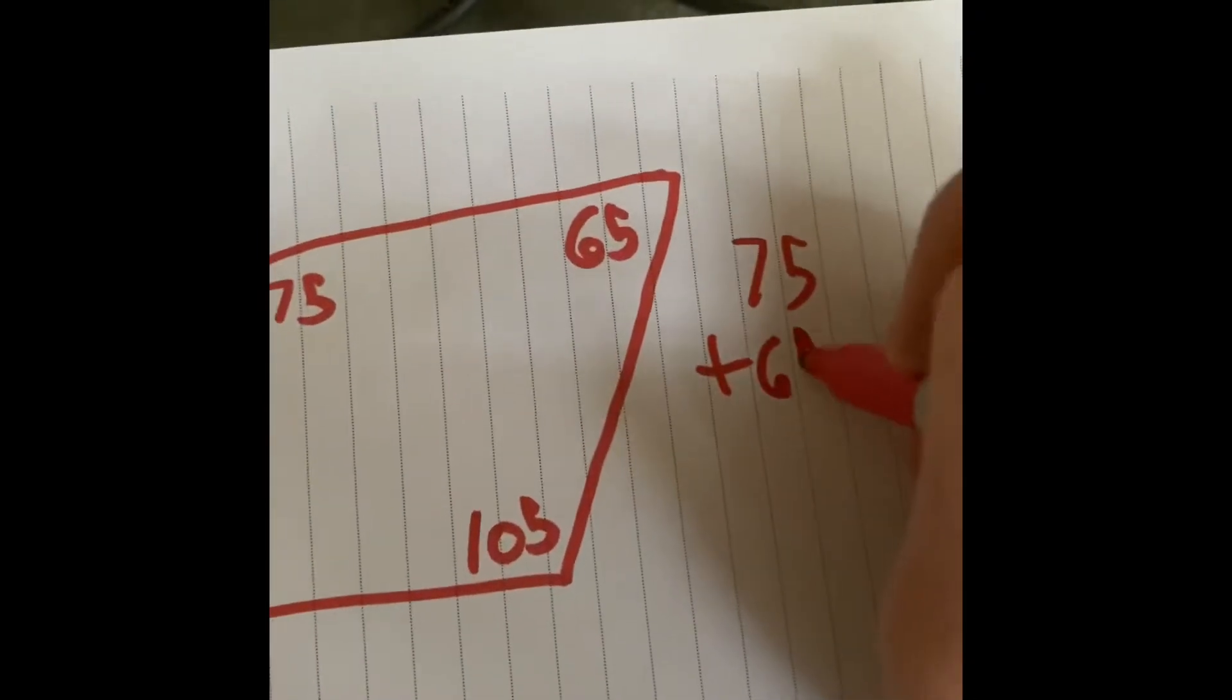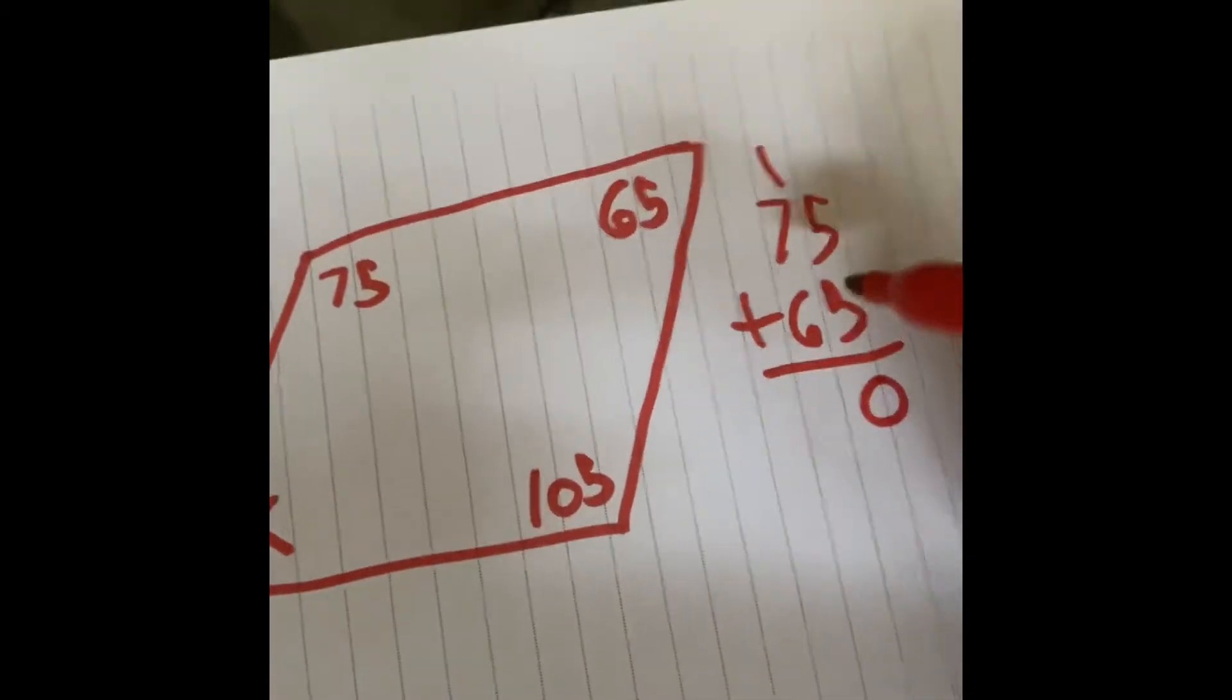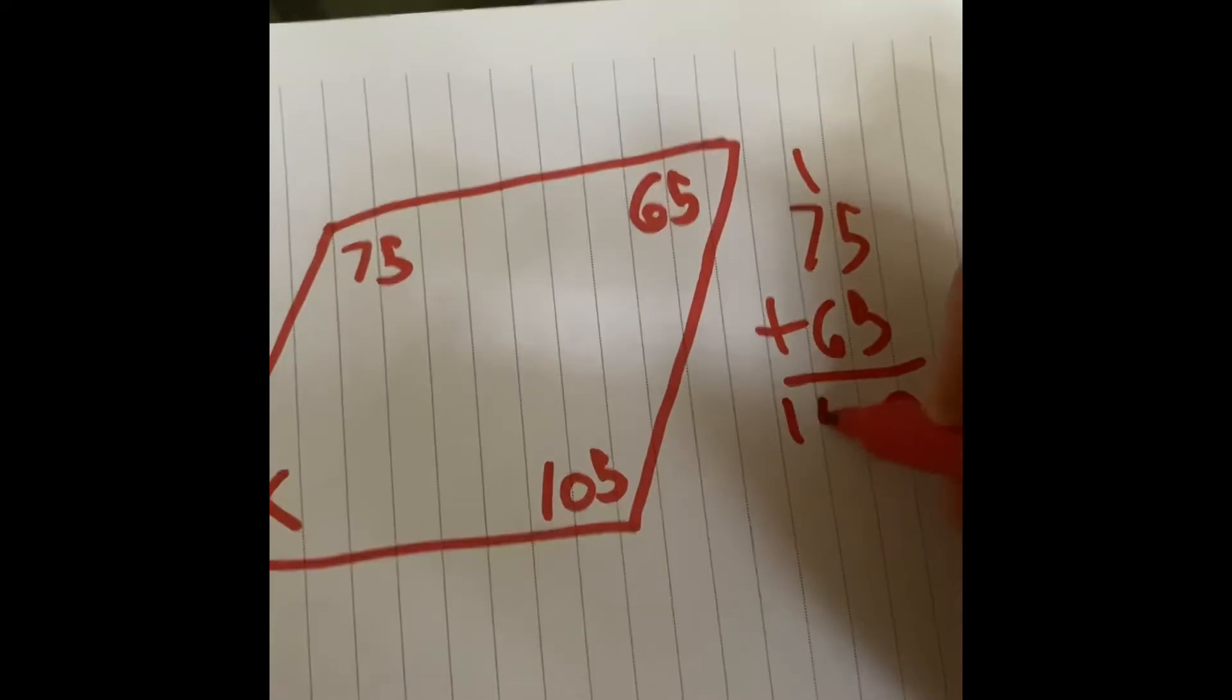So if I did 75 plus 65, I would get 7 plus 6 is 13 plus 1 is 140.